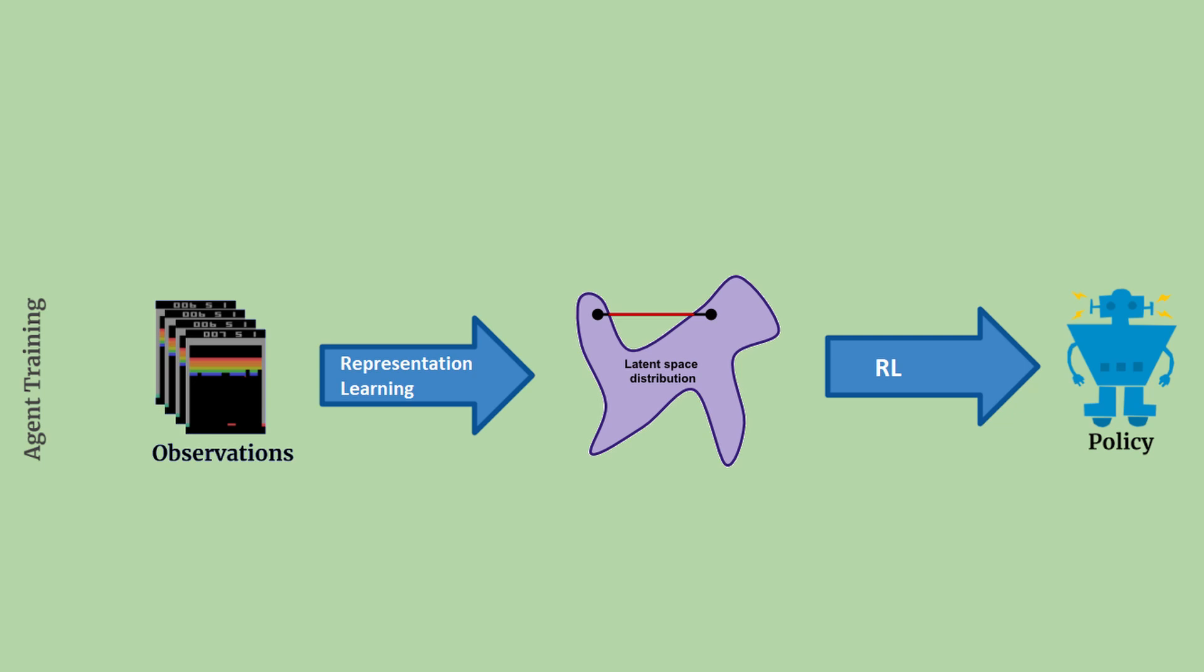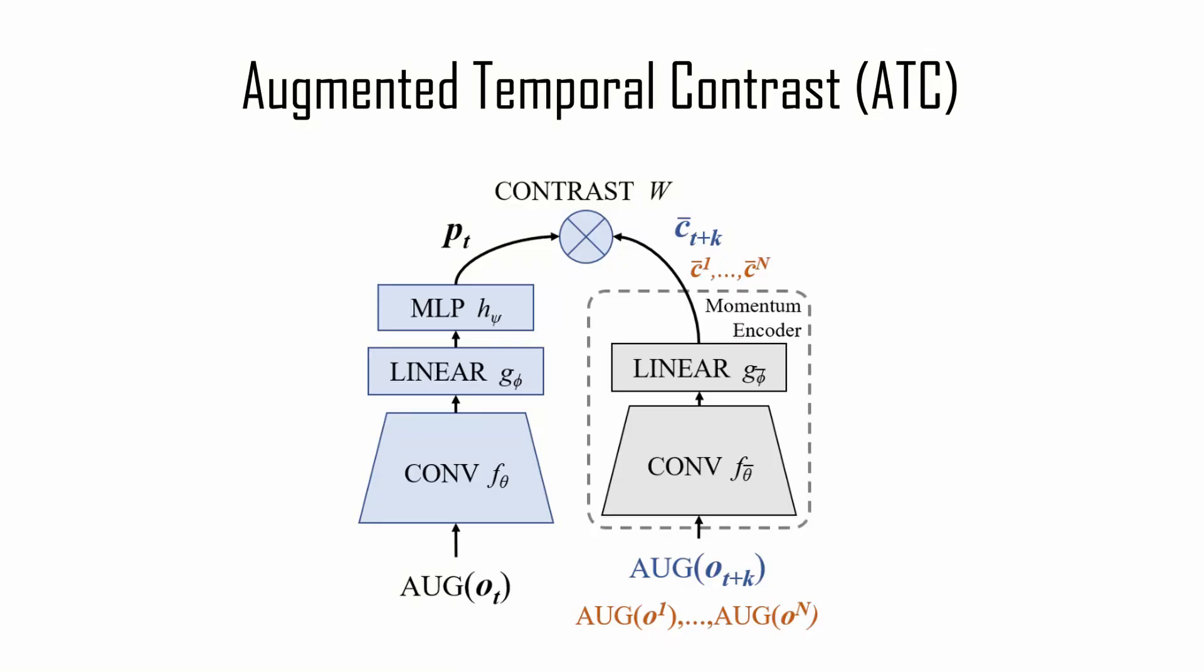In particular, this paper focuses on a new unsupervised learning task, called Augmented Temporal Contrast, or ATC,